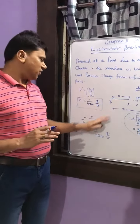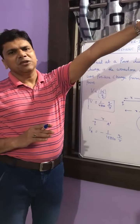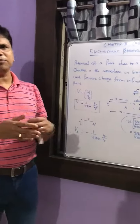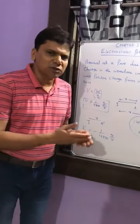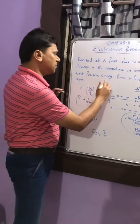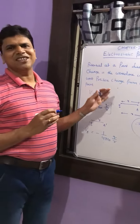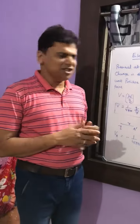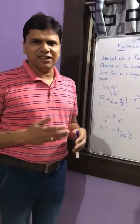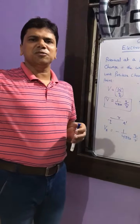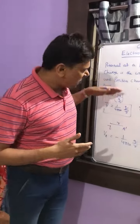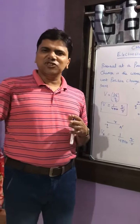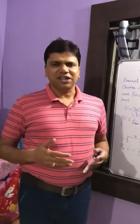Potential near a positive charge is positive and near a negative charge is negative. When close to a positive charge the potential is higher, but near a negative charge the potential is lower. Think of a negative charge like a negative person — the farther you are from it, the better your position. Similarly, a positive charge is like a positive person; the closer you are, the higher your level or rank.